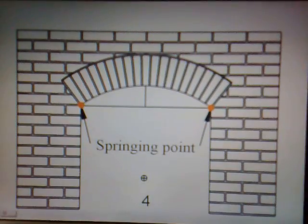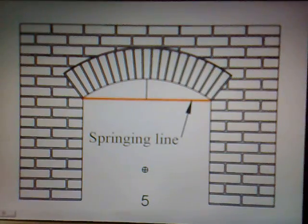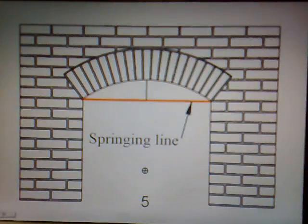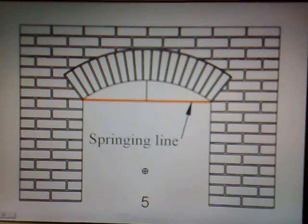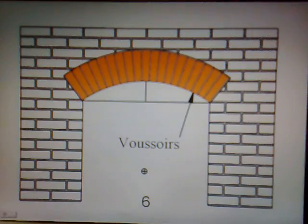Four: the springing point — this is the lowest point where the curve begins. Five: the springing line — this is a horizontal line drawn between the two springing points. Six: the voussoirs — these are the bricks that make up the arch.